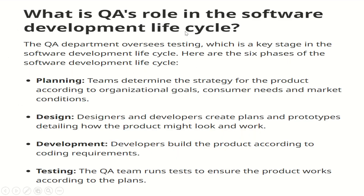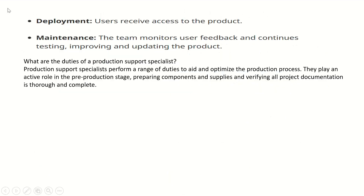What is the QA role in the software development lifecycle? The QA department oversees testing, which is a key stage in the SDLC. Here are the six phases: Planning - teams determine the strategy for the product according to organizational goals, customer needs, and market conditions. Design - designers and developers create plans and prototypes. Development - developers build the product according to coding requirements. Testing - the QA team runs tests to ensure the product works according to the plans. Deployment - users receive access to the product. Maintenance - the team monitors user feedback and continues testing, improving and updating the product.